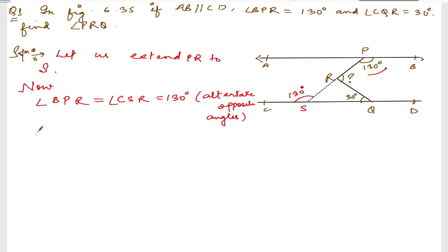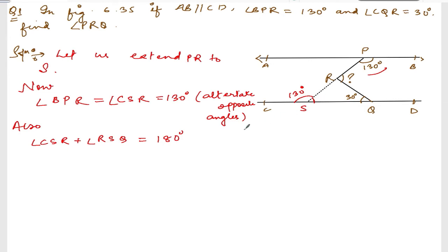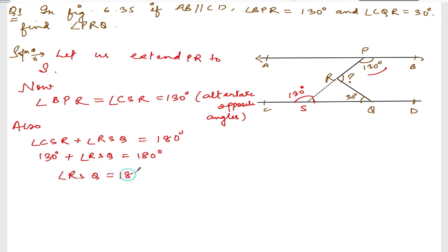Now, taking the straight line, angle CSR plus angle RSQ must equal 180° because they form a linear pair. So 130° plus angle RSQ equals 180°, which gives angle RSQ equal to 180° minus 130°, which is 50°.